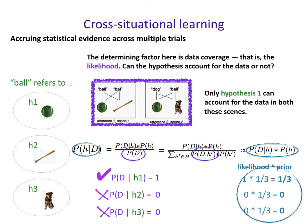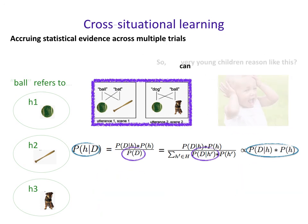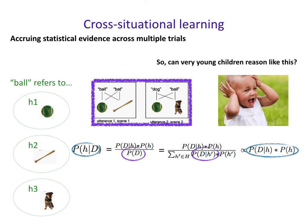What's really doing the work here is data coverage — the likelihood — being able to account for the data. Can the hypothesis account for the data or not? Only hypothesis one can in both scenes, which is why it ends up winning. This matches our intuition from the very beginning: it's the only one compatible with the data across both scenes. From the perspective of learning, we want to ask whether very young children can reason like this — paying attention to the prior, the likelihood, and the posterior — can they do this kind of inference?